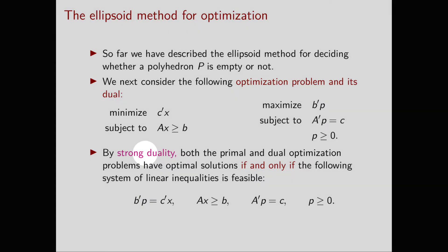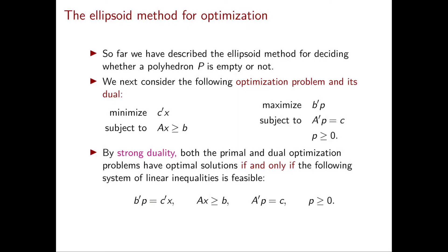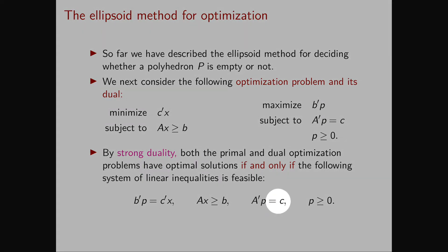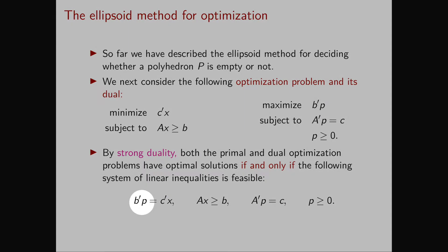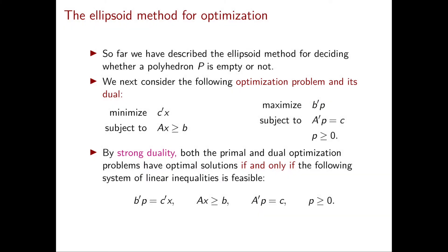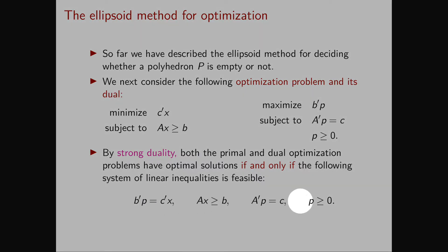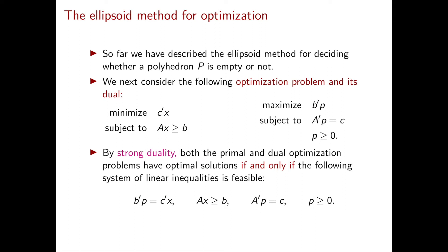Now we use strong duality. Strong duality implies that both the primal and the dual have optimal solutions if and only if we have a primal feasible solution and a dual feasible solution with the same costs. In other words, if and only if the following system is feasible: AX ≥ B for primal feasibility, A transpose P = C and P ≥ 0 for dual feasibility, and P transpose B = C transpose X for equal costs. We denote by Q the set of points (X, P) satisfying all these linear constraints.